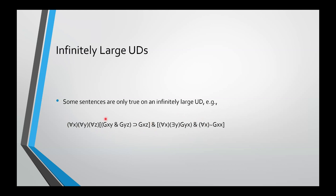There's also an interesting feature of mathematical examples: some sentences of PL are only true if the universe of discourse is infinitely large. For example, consider a sentence with three conjuncts. Reading G as 'strictly greater than': the first conjunct says if x is greater than y and y is greater than z, then x is greater than z; the second says for every x there is a y greater than x; and the third says nothing is greater than itself. If you have a finite universe of discourse, at least one of these conjuncts will be false — it can only be true with an infinitely large universe, like the positive integers. So there are times when an infinite universe of discourse is necessary to make a sentence true.